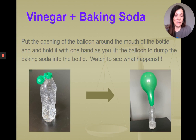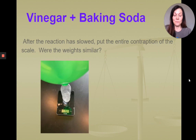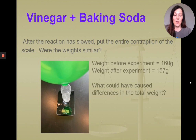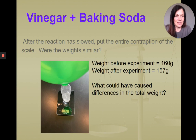At this point, I took the entire contraption — our inflated balloon attached to our bottle — and put it on our scale. The question is: were the weights similar? Right before the experiment we had 160 grams of reactants, and our weight after the experiment equaled 157 grams. What could cause the difference in the total weight of our reactants and our products?